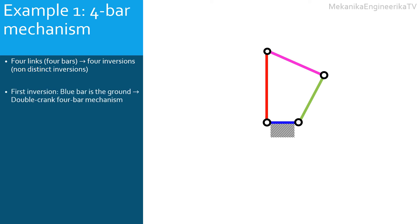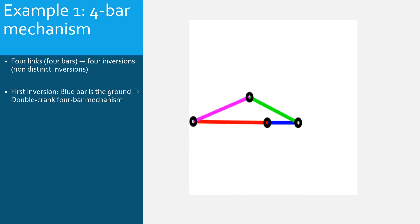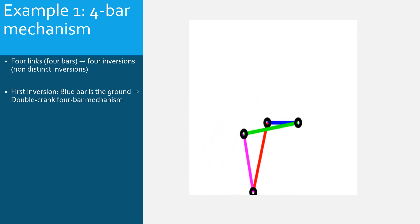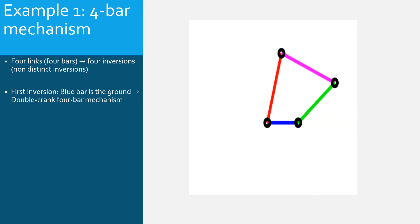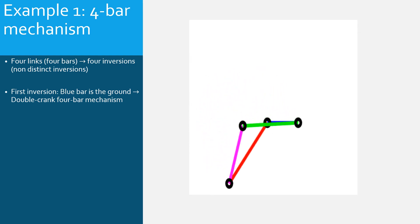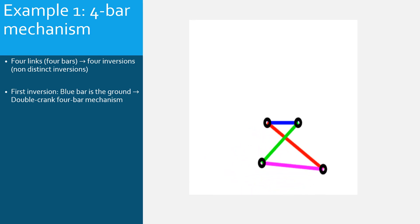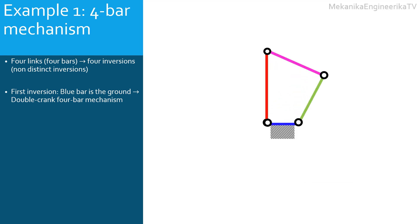Let's start with the first inversion. In this inversion, the blue bar is considered as the ground. The red, magenta, and green bars are all rotating. Mostly, the red and the green bars are one the input and the other is the output. The magenta bar is the coupler. Here, the red and green bars can undertake a full 360-degree rotation. They are called cranks. This mechanism is called a double crank four-bar mechanism. Mostly, the ground is not represented as a separate link; only connections with the ground are represented in the kinematic diagram.